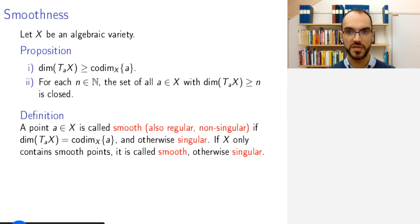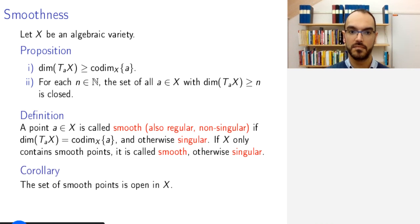So a point is smooth if it has a tangent space of the appropriate dimension, meaning that locally at that point, the variety can be approximated by a linear space. As a corollary of the above, we get that the set of smooth points is open in X, simply because the set of all points where the dimension is at least the co-dimension of a plus 1 is closed. So therefore, the set of smooth points is open.